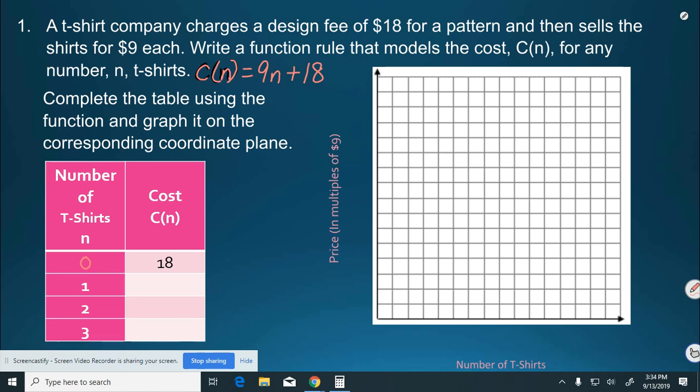So, 18 plus 9 is going to be $27. For two t-shirts, it's another 9. That would be $36. For three t-shirts, it would be 9 more or $45.